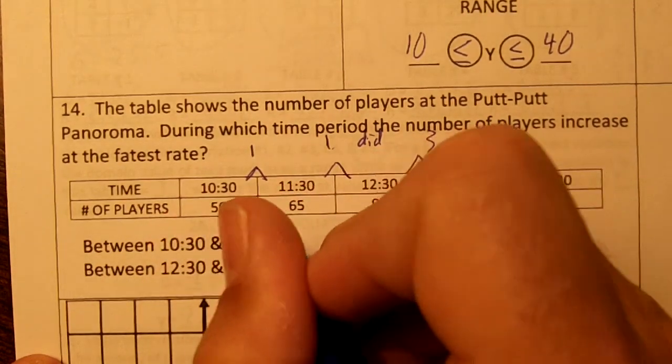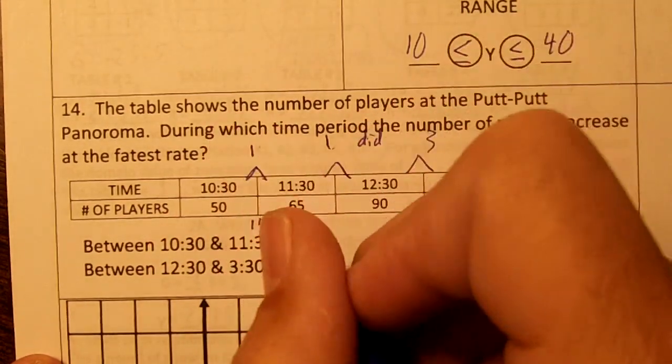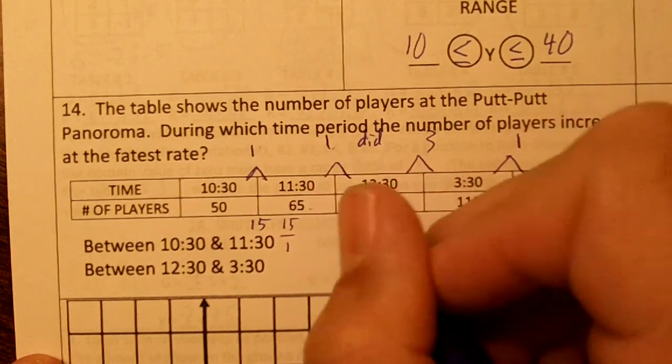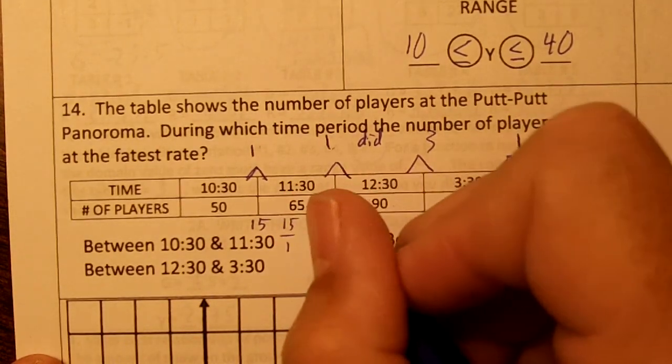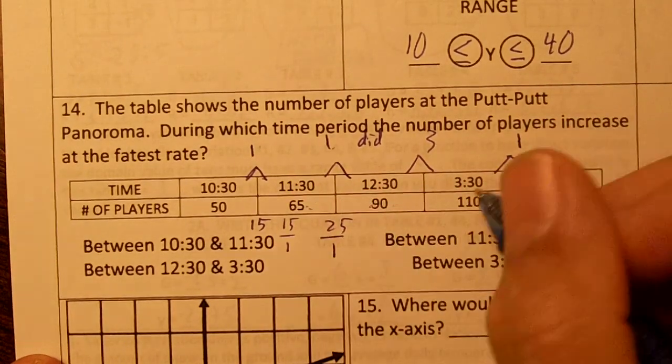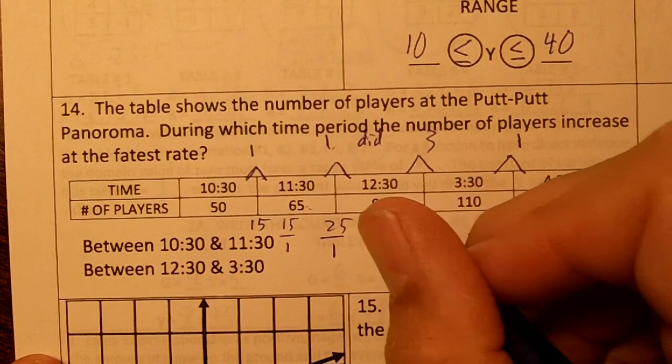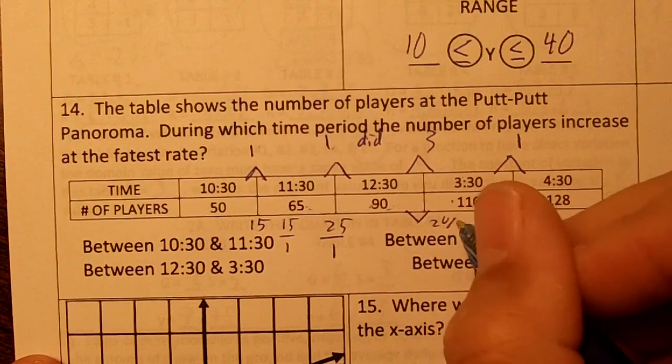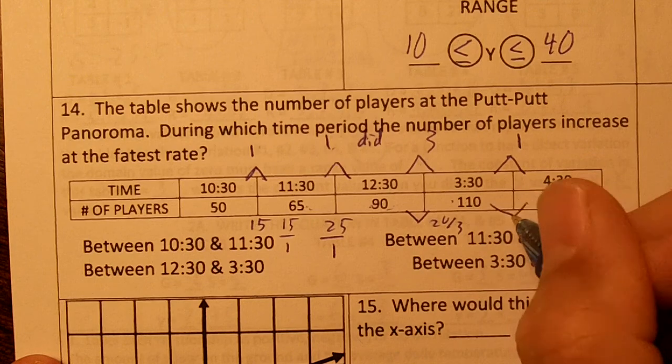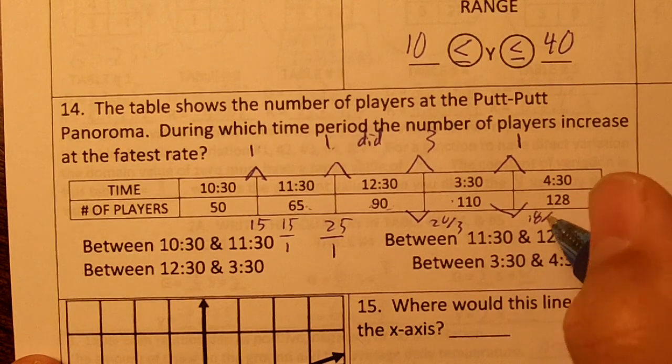So between these two we have 15, which would be 15 over 1. These two we would have, what would that be, 25 over 1. These two we would have 20 over 3, and right here we would have 18 over 1.